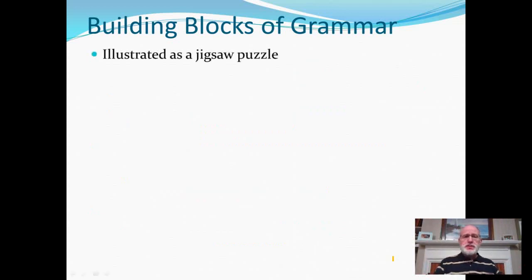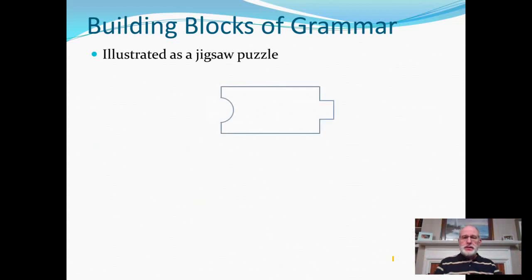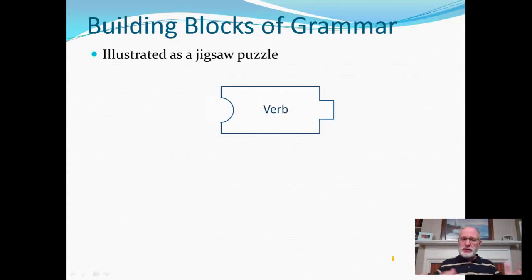Let's move on now and talk about the idea of sentence diagramming — these building blocks of a sentence illustrated as a jigsaw puzzle. Here is a rather rudimentary jigsaw puzzle piece. We're going to talk first about the kernel of a clause, and so that piece, as I have drawn it, would represent the verb. You notice it has two connecting points — on the left and on the right — and you're going to be looking for sentence elements that fit those connecting points, just like jigsaw puzzle pieces fit together.